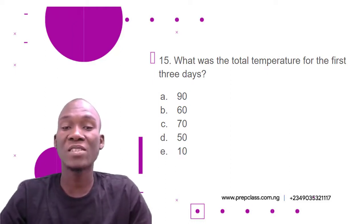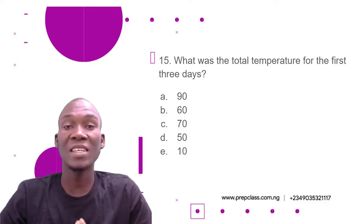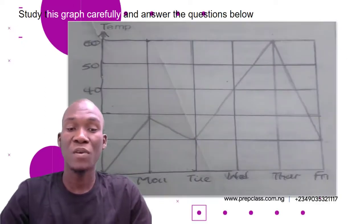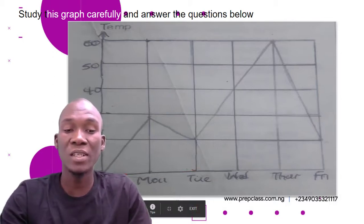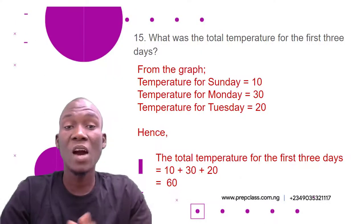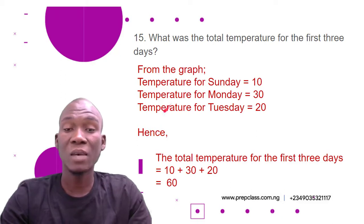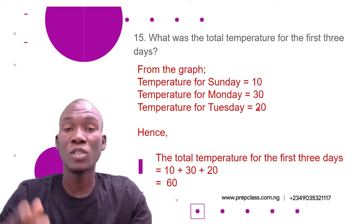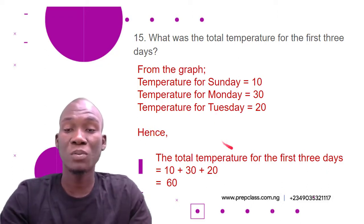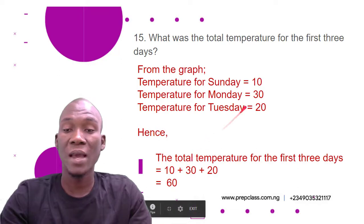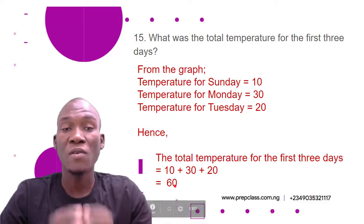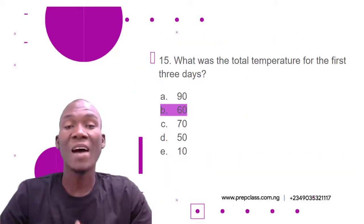Now we move to the last question for today's video. Question 15: What was the total temperature for the first three days? Options: A) 90, B) 60, C) 70, D) 50, E) 10. Looking at the temperature for the first three days: Sunday is 10, Monday is 30, Tuesday is 20. Total temperature equals 10 plus 30 plus 20, which gives us 60. The correct option is option B.